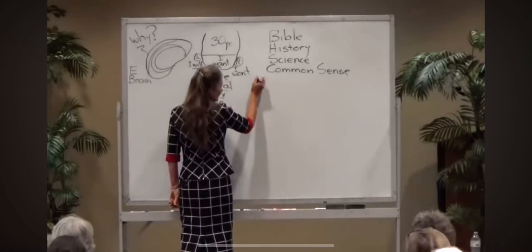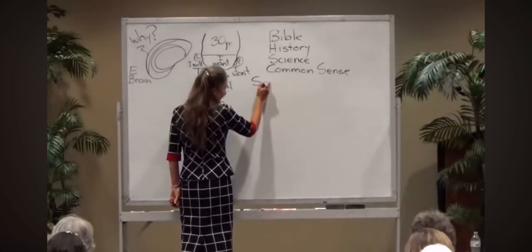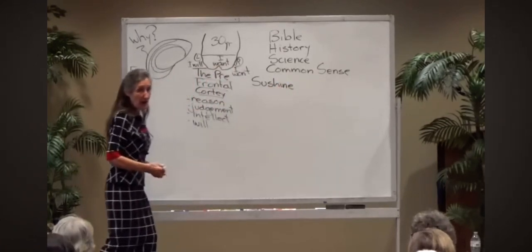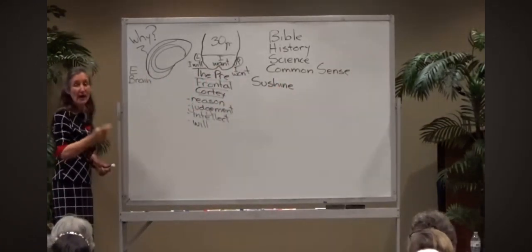We've been looking at the basic laws that govern the body and the brain. Sunshine. Our brain needs sun, and you know how it gets sun? Through our eyes.